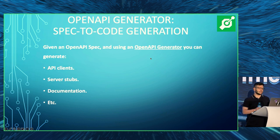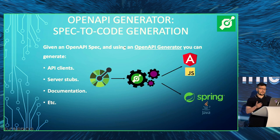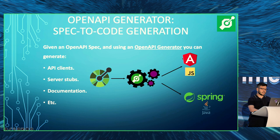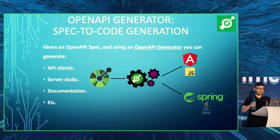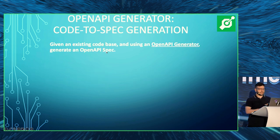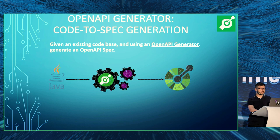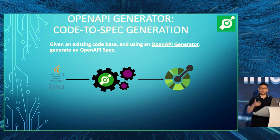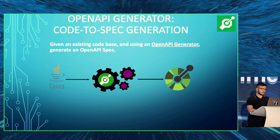The next tool is an OpenAPI generator. Given an OpenAPI spec, using a generator you can generate APIs, server stubs, clients, documentation, et cetera. This scenario is called spec-to-code generation, because you use a spec document to actually generate some code. We'll see this in the demo. The reverse is called code-to-spec generation — where you use an existing code base and generate an OpenAPI spec file for documentation.